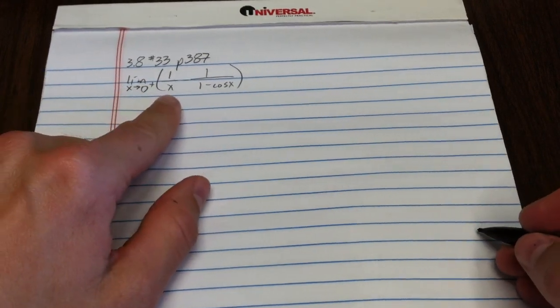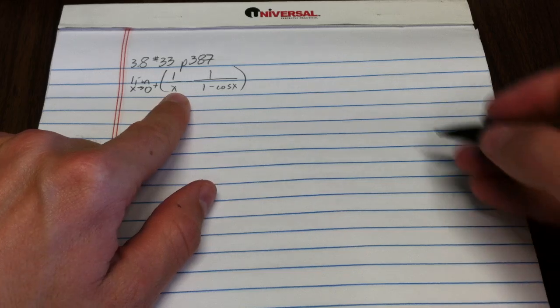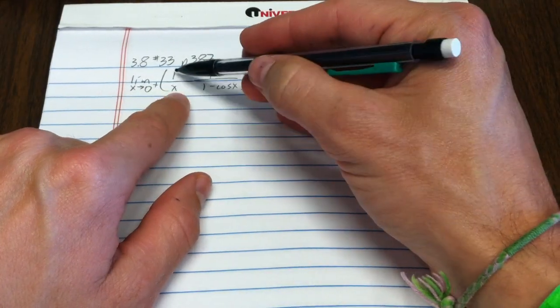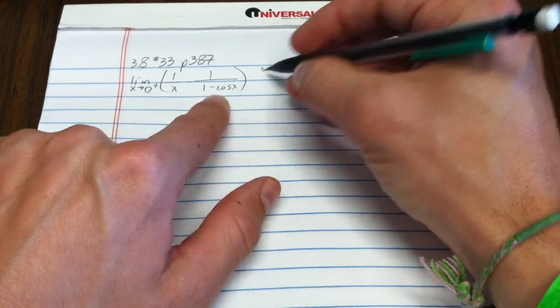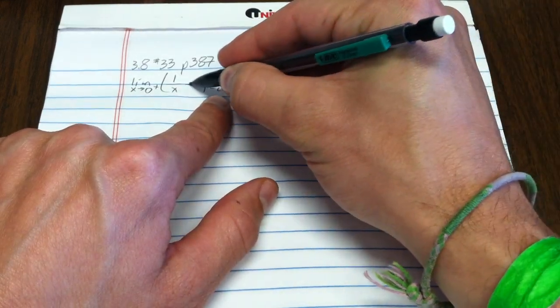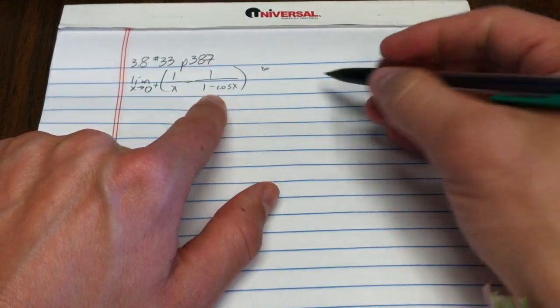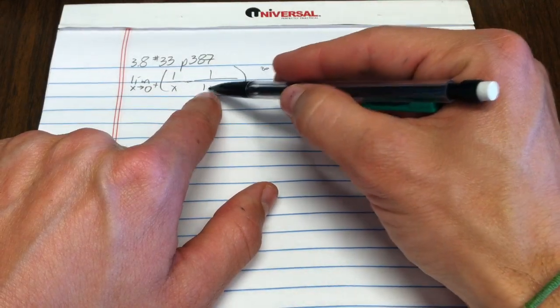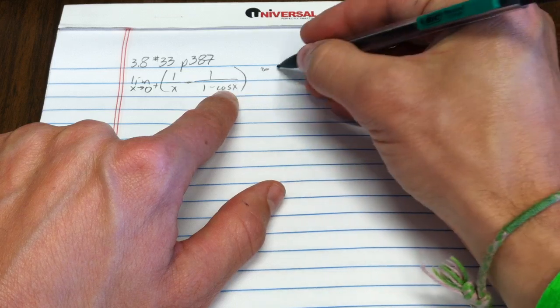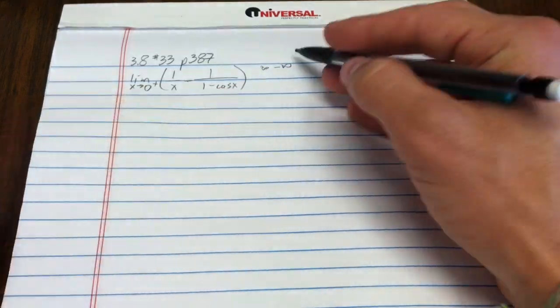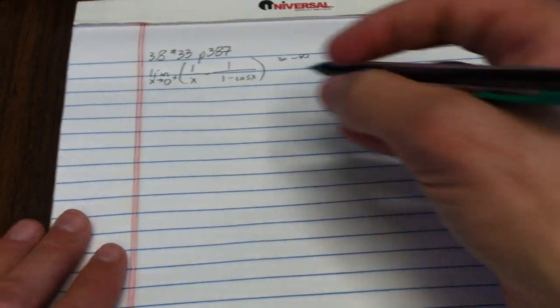Can you see that we have something that is indeterminate? As x goes to 0, this term is approaching infinity. This term is approaching, I have a minus sign there it's just a little obscured, 1 over, and this is slightly less than 1 but going to 1. So infinity minus infinity, that's not a form that we can use L'Hôpital's rule on.